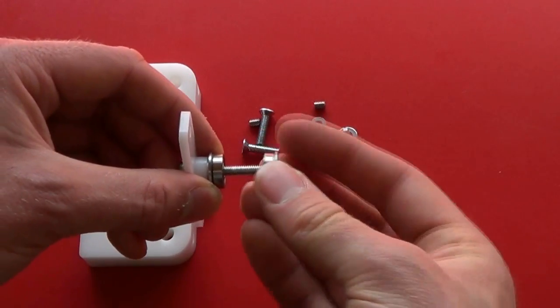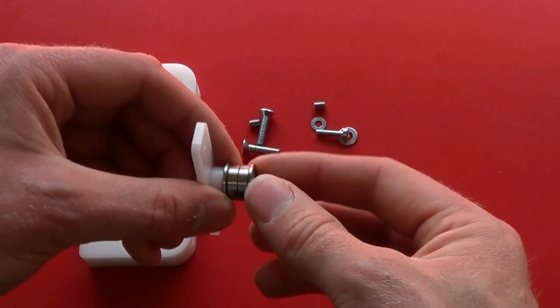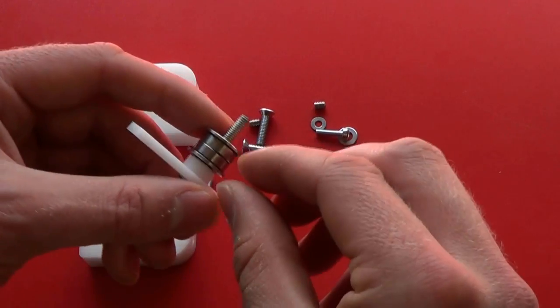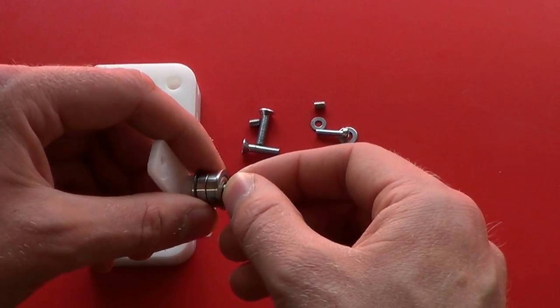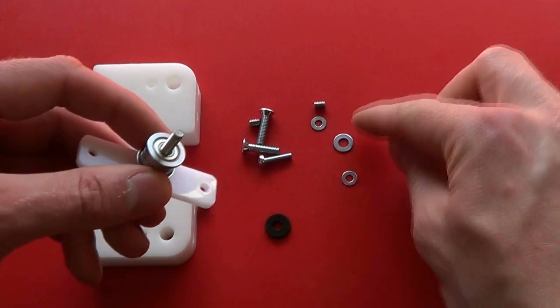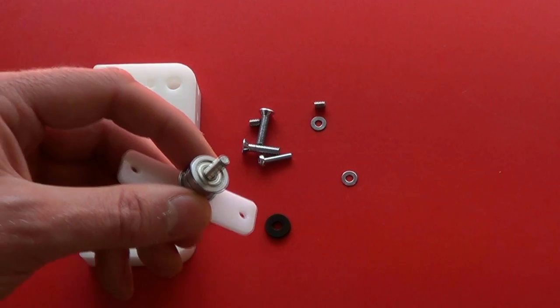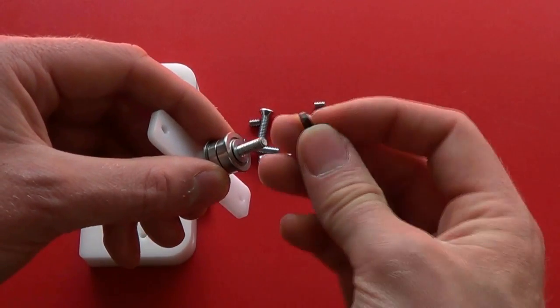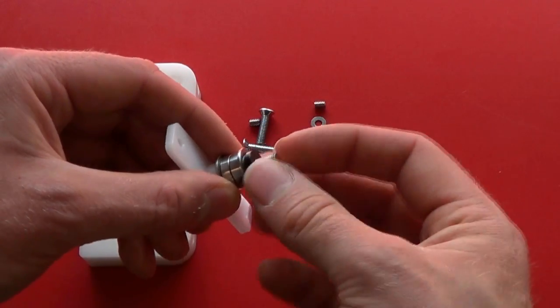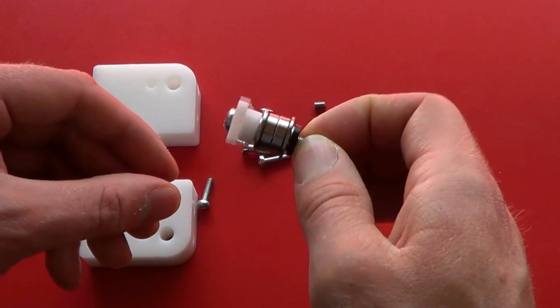Put on the other idler bearing the opposite way around. So these two flanges will keep the belt from drifting off the idler. Put on the other steel washer and the thinner spacer. That's now all assembled.